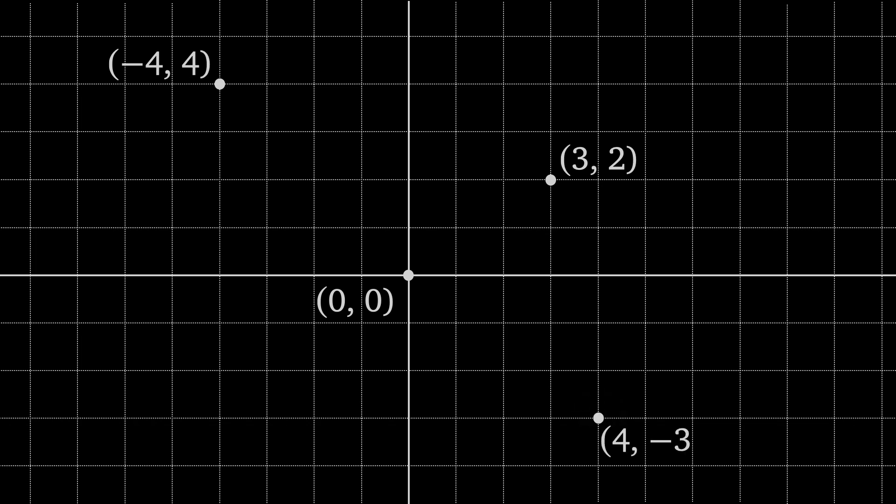This is the integer lattice. It's the set of all integer coordinates visualized such that the coordinates lie at the intersections of the lines on a grid. Each point is uniquely defined by an ordered pair of integers.